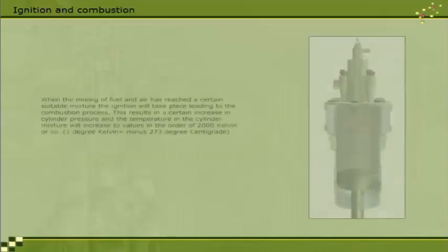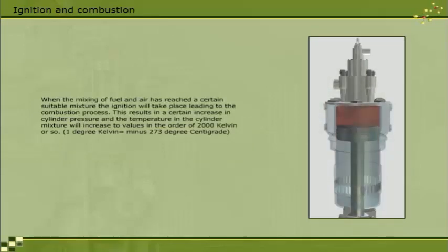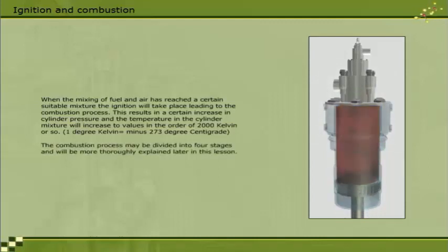When the mixing of fuel and air has reached a certain suitable mixture, the ignition will take place, leading to the combustion process. This results in a certain increase in cylinder pressure, and the temperature in the cylinder mixture will increase to values in the order of 2000 Kelvin or so. One degree Kelvin is equal to minus 273 degrees centigrade. The combustion process may be divided into four stages and will be more thoroughly explained later in this lesson.